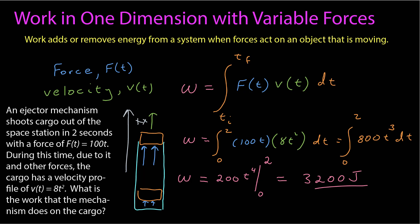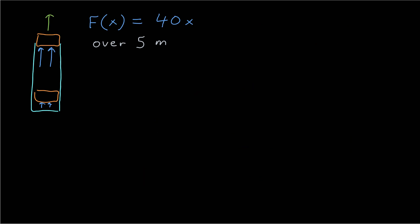However let's look at the special case where the force varies as a function of position but not time. I have another exit chute for cargo in a spaceship, but in this case my force is known to vary over length as 40x, and this acts over the five meters of the exit chute for the spacecraft.